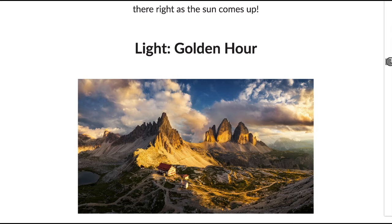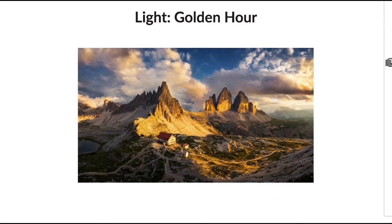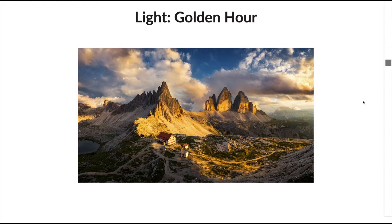Two types of light that work really well for landscape photography are the golden hour and the blue hour. Here's an example of the golden hour — we can see beautiful golden light because the sun is much lower on the horizon, cutting through the atmosphere and hitting these mountains beautifully. You'll also notice this photo has a foreground element, a middle ground, and a background.